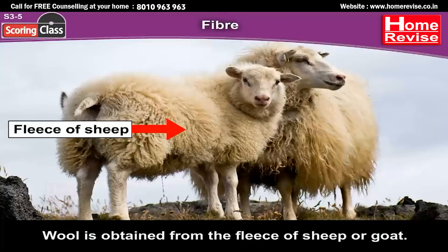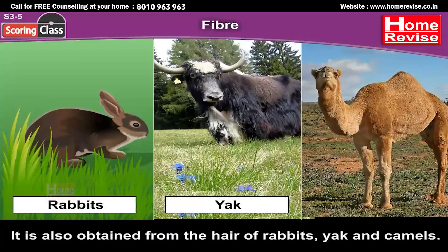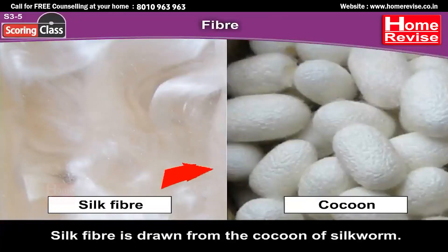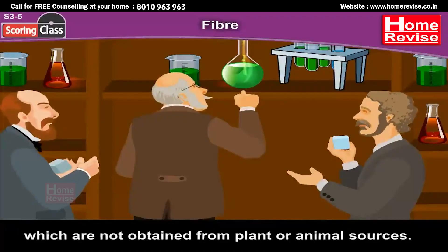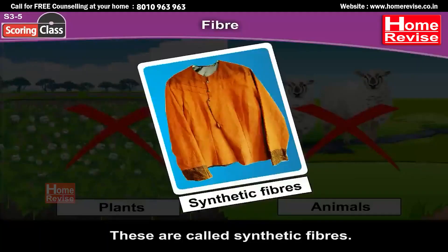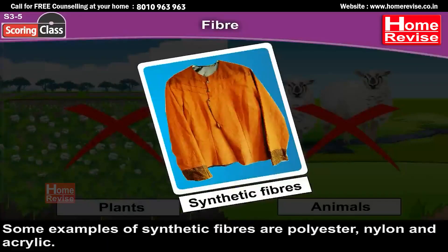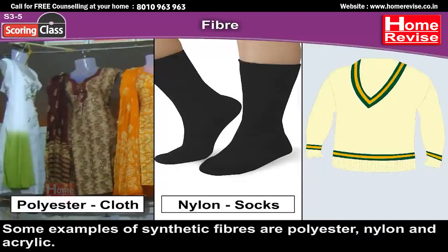Wool is obtained from the fleece of sheep or goat. It is also obtained from the hair of rabbit, yak and camel. Silk fibre is drawn from the cocoon of silkworm. In the last hundred years or so, fibres are also made from chemical substances which are not obtained from plant or animal sources — these are called synthetic fibres. Some examples of synthetic fibres are polyester, nylon and acrylic.